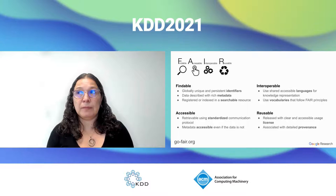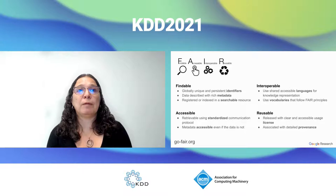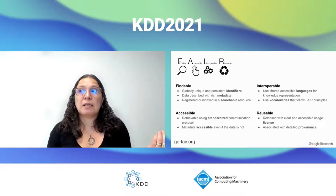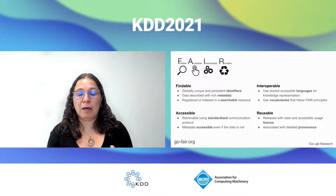Data needs to be registered in an indexable and searchable resource — if a dataset exists somewhere but nobody can find it, it's not of much use except to those who created it. Accessible means it should use standardized protocols for access; it shouldn't be behind firewalls. One should be able to use standard tools to get to it, and the same applies to metadata.